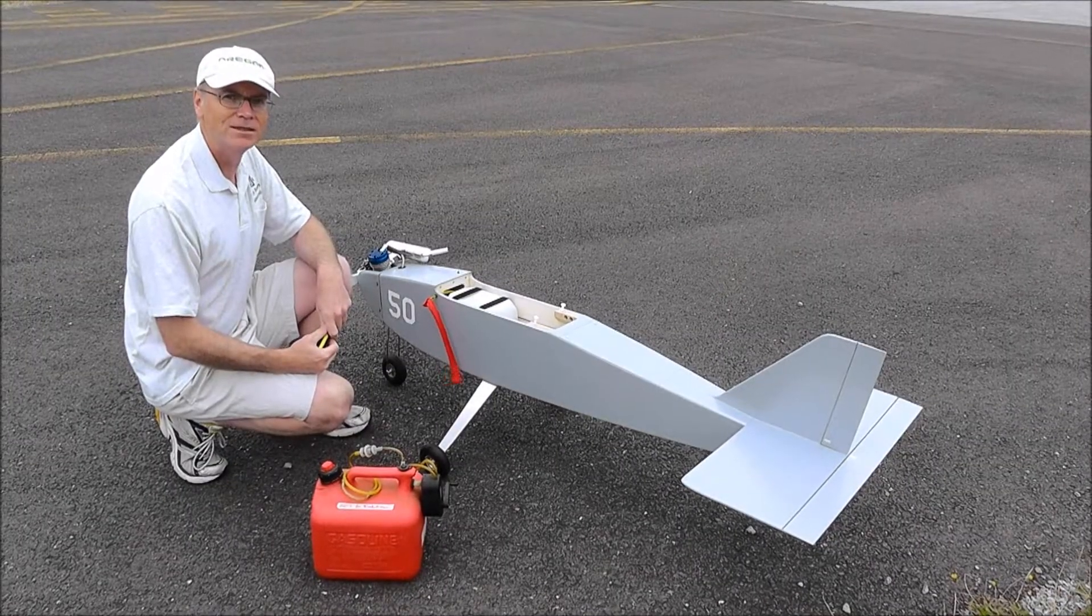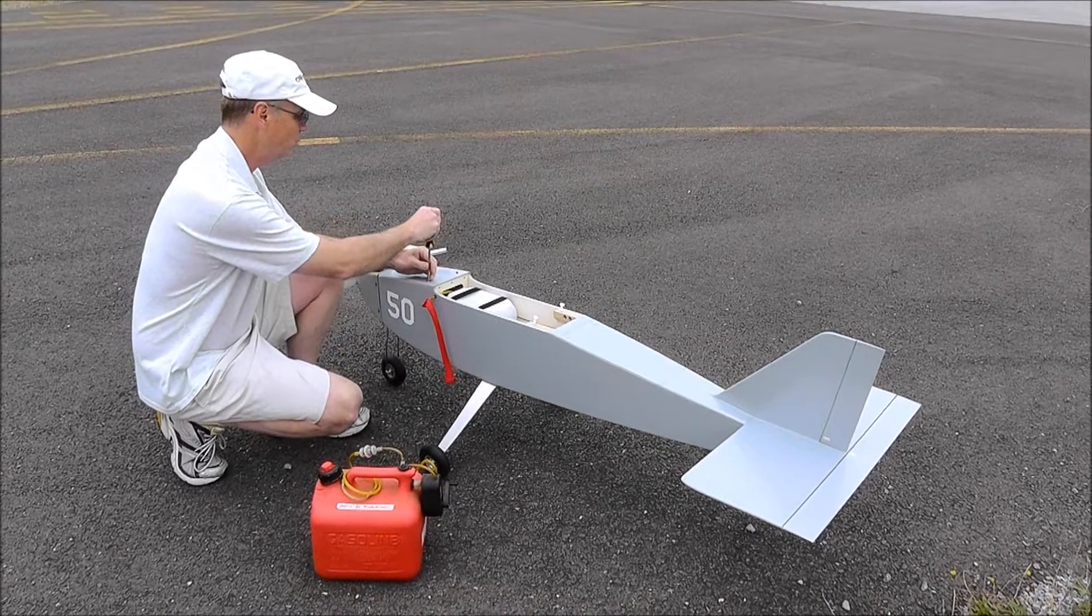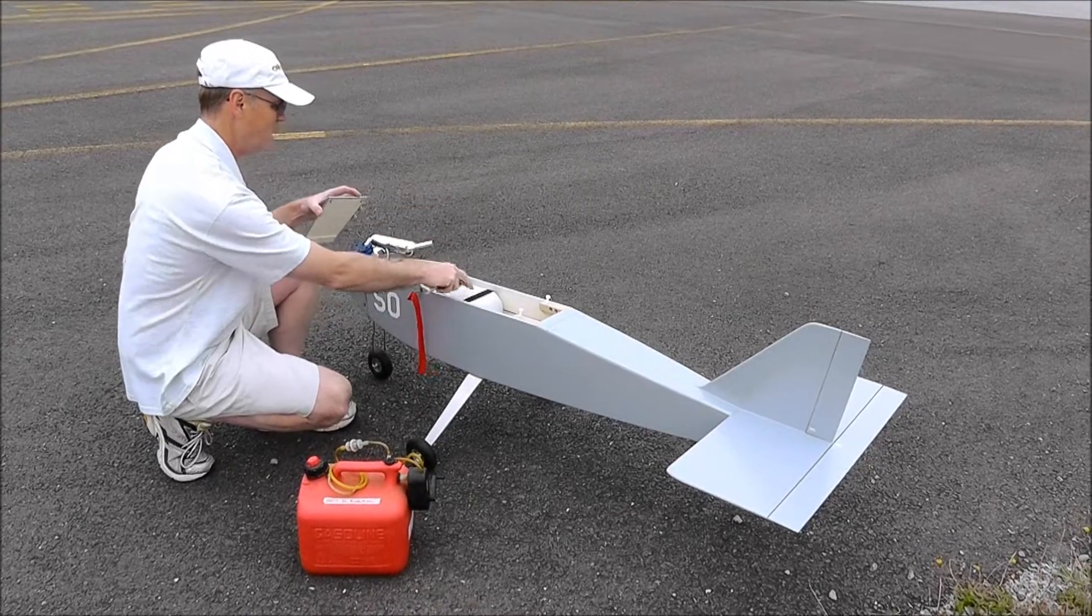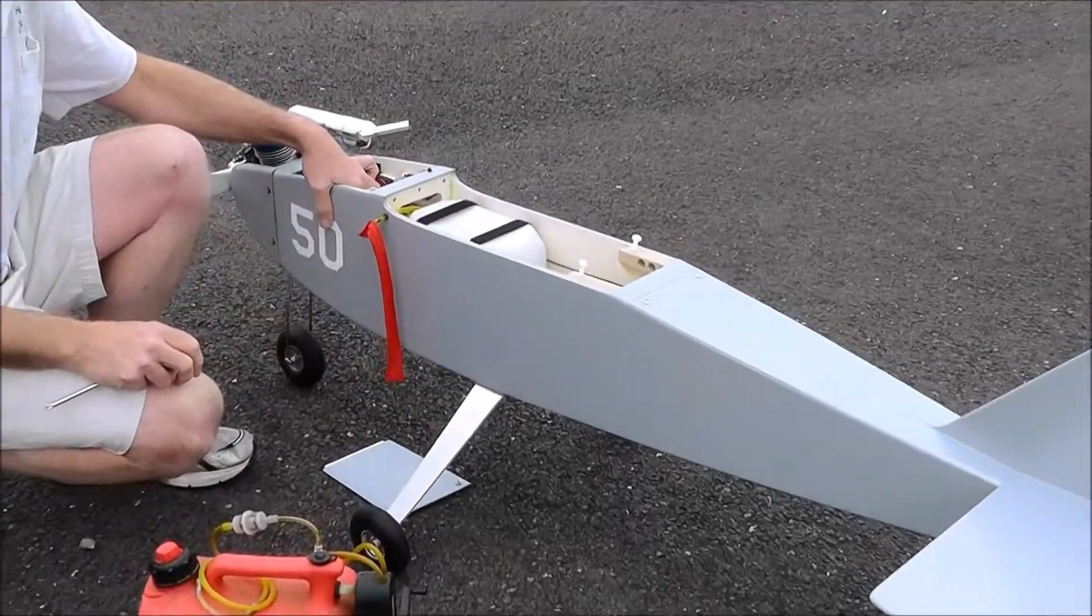A quick couple of notes on the fueling system and fueling the aircraft. There are two tanks in this hauler. This is the main tank, it's 60 ounces. There's a smaller tank in the nose, it's 20 ounces.